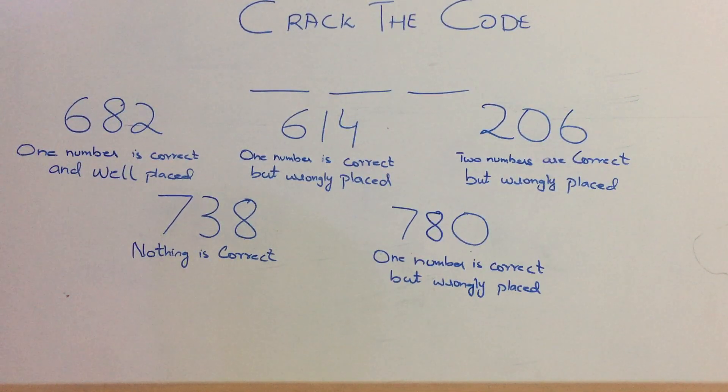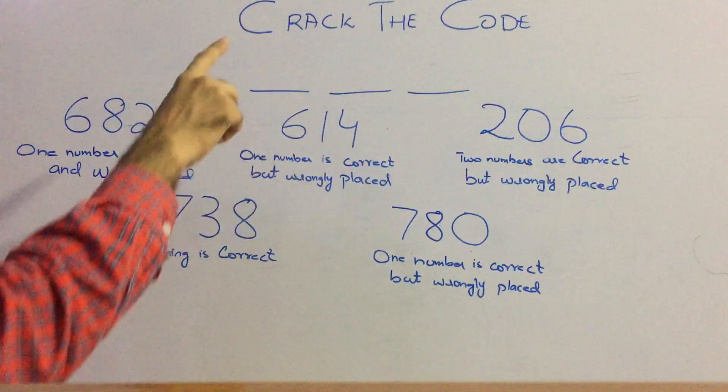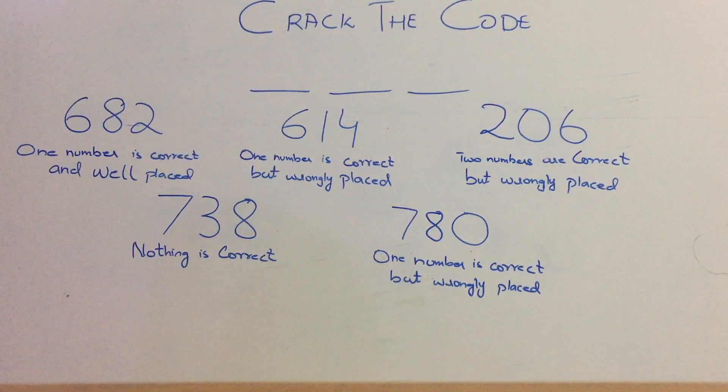You have seen this question on social media, so now we are going to solve it. There are 5 hints to solve this numeric lock. Let's read one by one. First hint is 682 - one number is correct and well placed. Second hint is 614 - one number is correct but wrongly placed. Third is 206 - two numbers are correct but wrongly placed. Fourth is 738 - nothing is correct, so none of these numbers are in this lock. Fifth is 780 - one number is correct but wrongly placed.